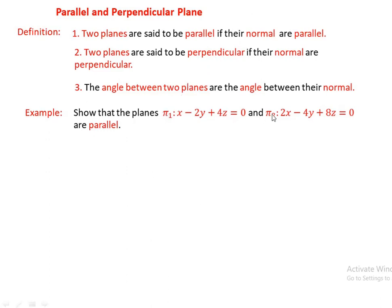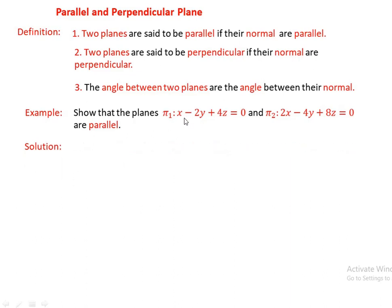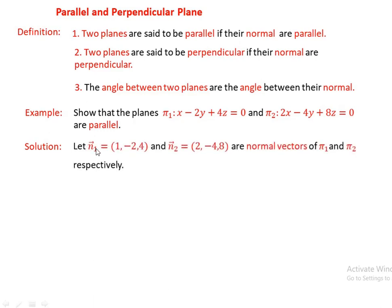The pi1 and pi2 are parallel. We should identify the normal vector for each of the corresponding planes. The normal vector for pi1 is n1 = (1, -2, 4), and the normal vector for pi2 is n2 = (2, -4, 8). These are the normal vectors of pi1 and pi2 respectively, taken as coefficients from the general plane equation.